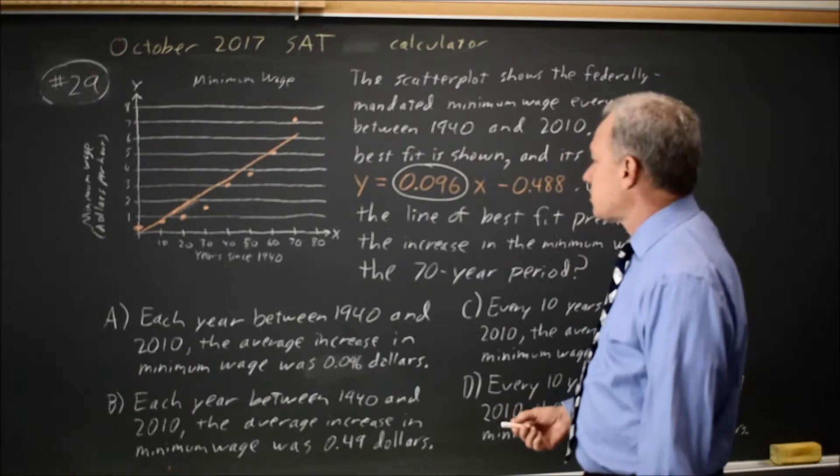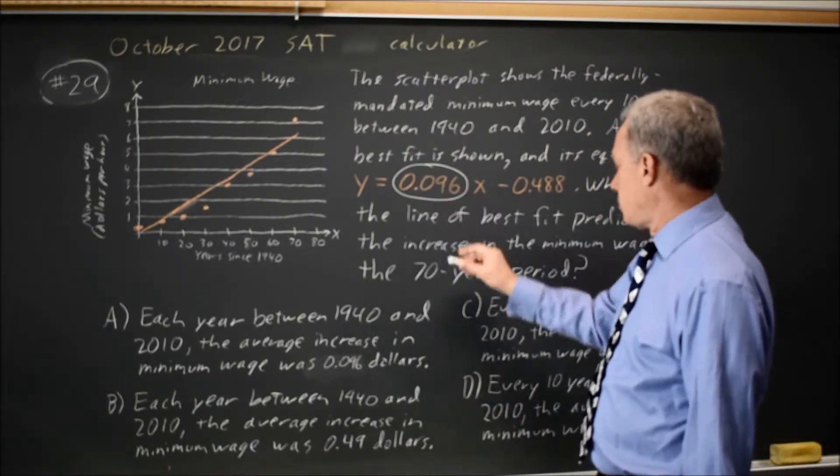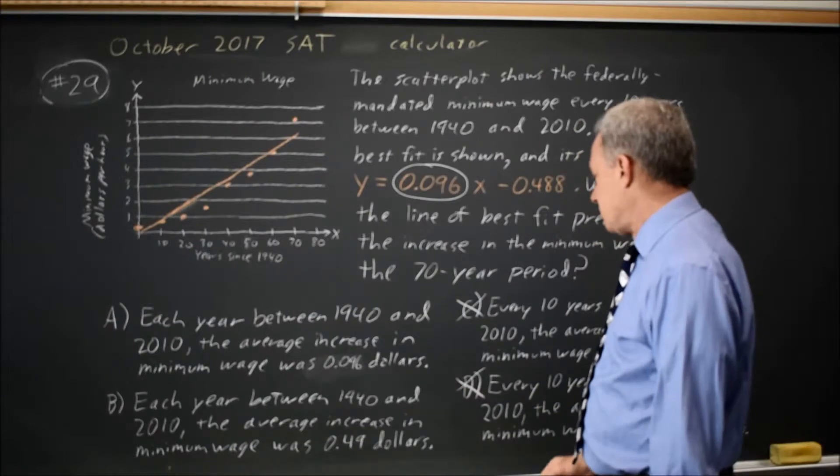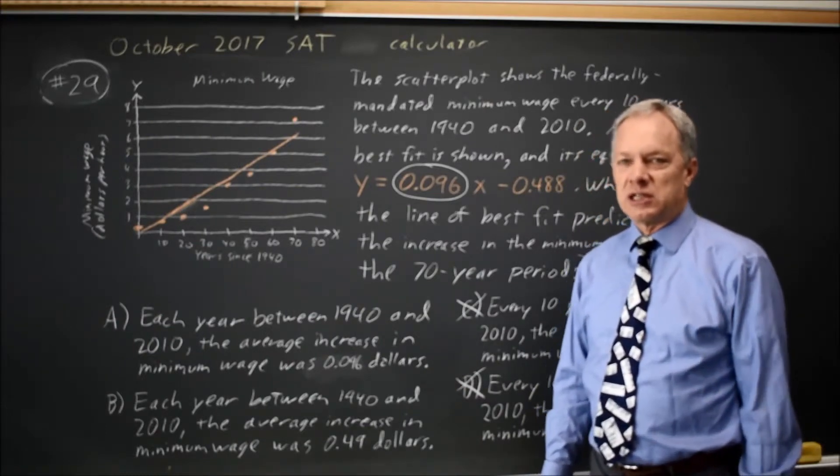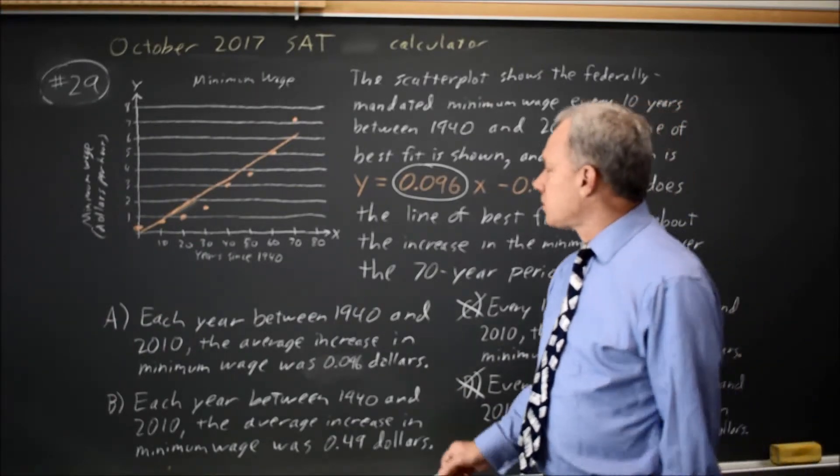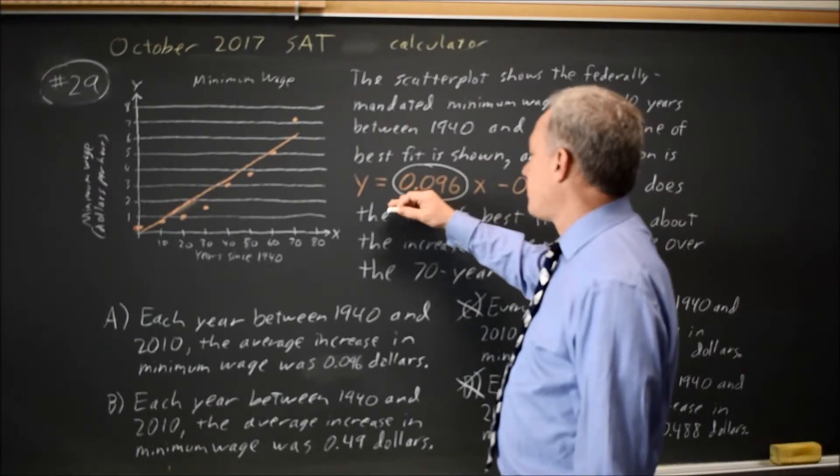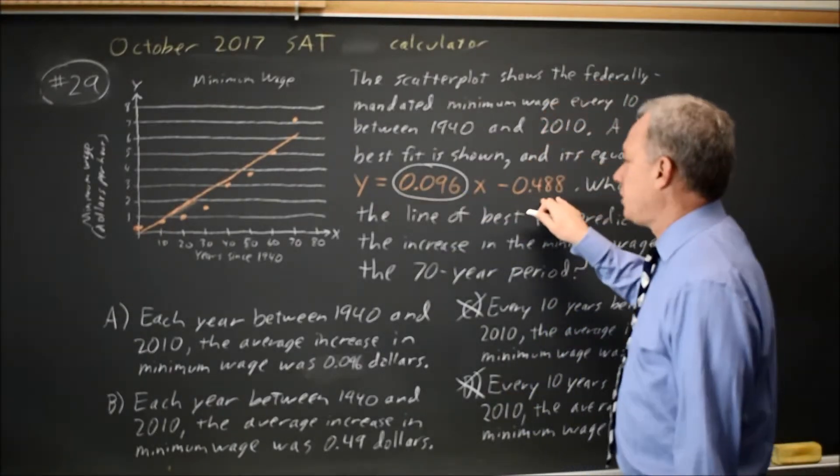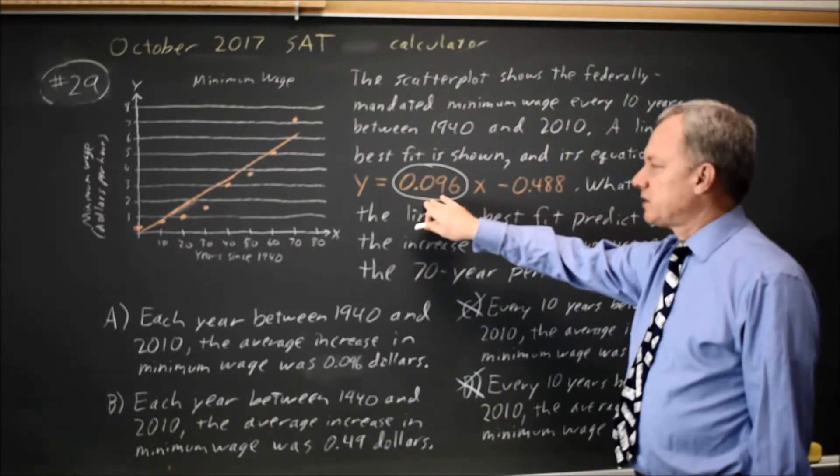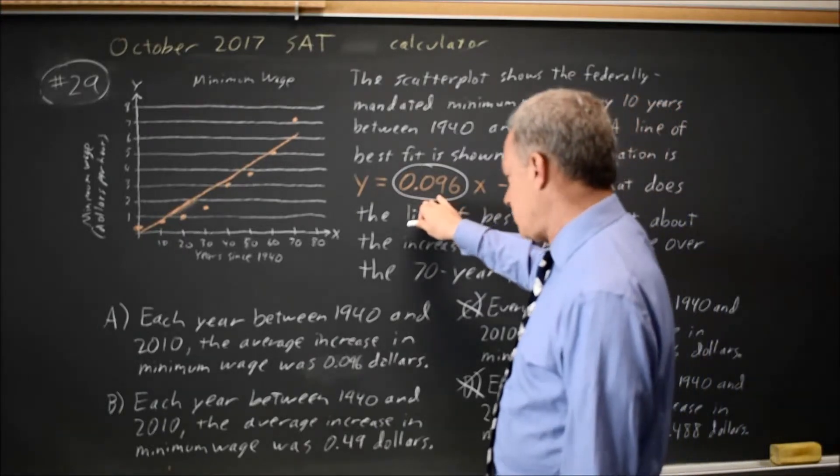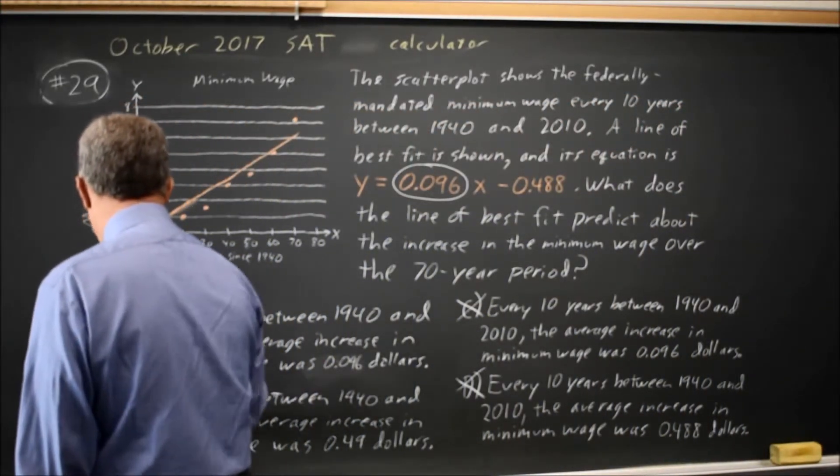Since x is years and not decades, the slope is every year and not every 10 years, that rules out choices C and D. And the slope is the coefficient of x. Y equals mx plus b, m is .096, and m is the slope, so the correct answer is A and not B.